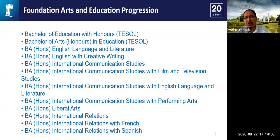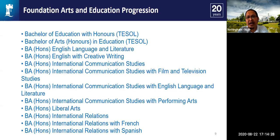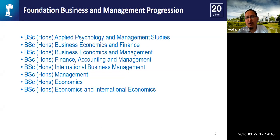I'd like to share some progression pathways for specific foundation backgrounds. If a student wants to do any degree in Education, English, International Communication, International Relations, or Liberal Arts, the best foundation is Foundation in Arts and Education. If they want a more math-driven program involving business, economics, or applied psychology, the most recommended is Foundation in Business and Management.